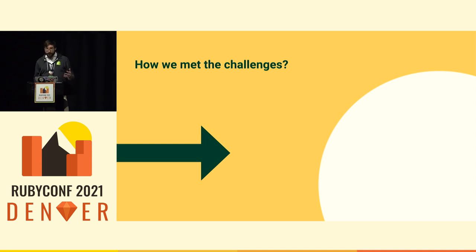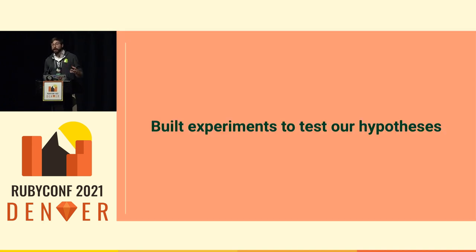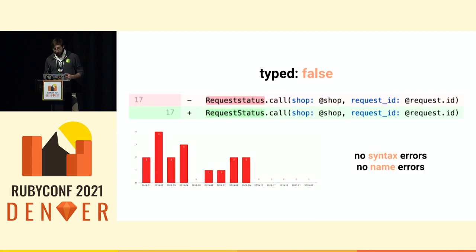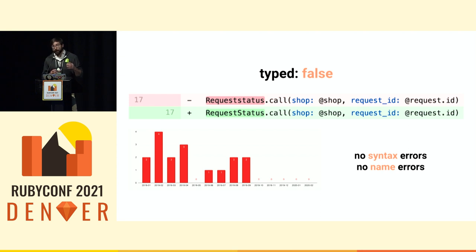Before deciding to introduce gradual typing into Shopify culture and asking all developers to use it, we wanted to make sure we were actually making the right decision. So we built a series of experiments to test our hypothesis. We started by gradually moving files to typed false, which means Sorbet just checks whether the constants you're using are declared somewhere and whether there are syntax errors. As soon as we started migrating some of these files, we realized we were no longer seeing syntax errors and naming errors in production — at a very minimal cost of just adding the annotation on top of the files.